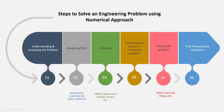Now let's see how a problem can be solved using the numerical method. This is the general approach. In the first step, we understand the problem — what we need to solve, our needs, and our end goal. Then we design our model using CAD software like SOLIDWORKS, NX, CATIA, CREO, Autodesk Inventor — there are many modeling software options. ANSYS also has two design tools: SpaceClaim and ANSYS Design Modeler, which we will look at later.